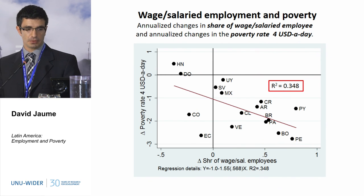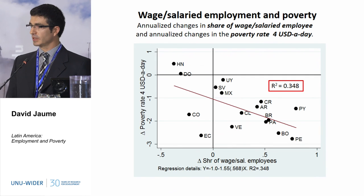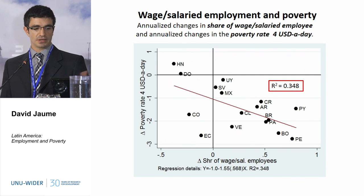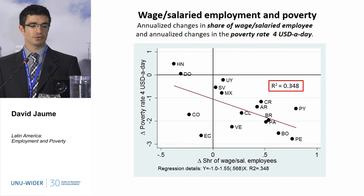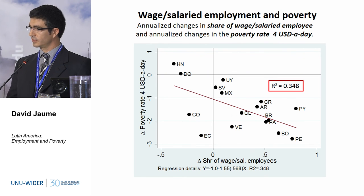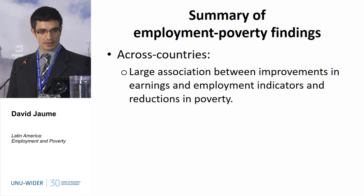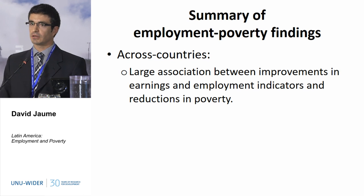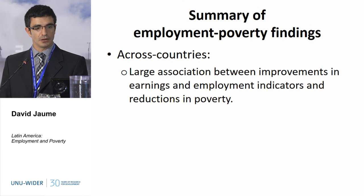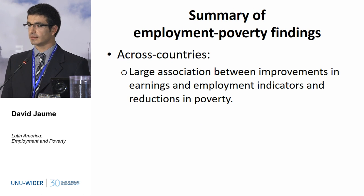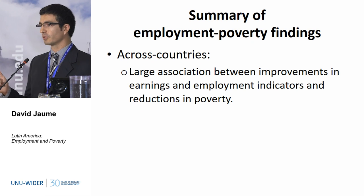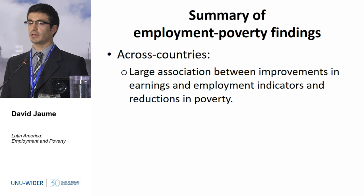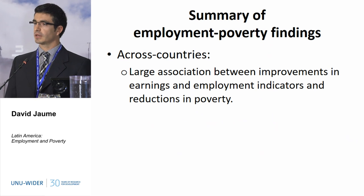This is another relationship related to the job mix. Improvements in the job mix — in this case expressed by the share of salaried workers — are also correlated to decreases in poverty, but the relationship is a little bit weaker. To conclude: despite not finding a very tight relationship between the rate of economic growth and decreases in poverty, we found a very tight relationship between improvements in labour market indicators and reductions in poverty.